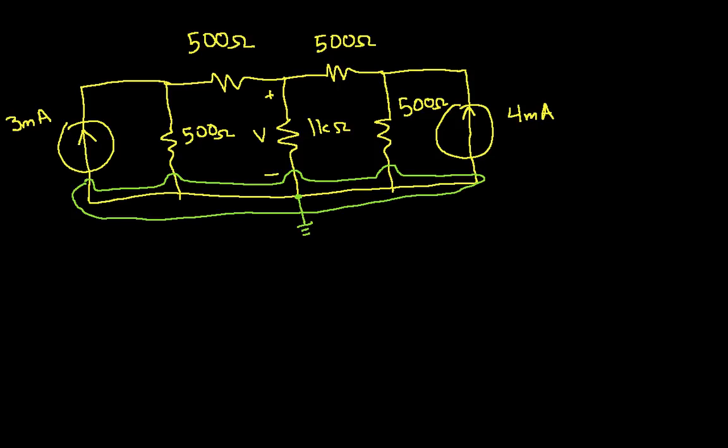We'll assign node voltages, and each of these node voltages is going to be with respect to the reference node. So I have a node here. I will assign this node voltage V1. When I talk about V1, what I mean is the voltage difference between the node that I've circled in red and my reference node. That voltage will be V1.